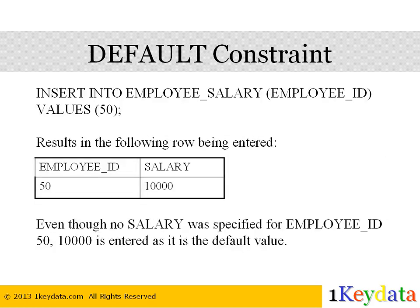Next, we attempt to insert data into the employee_salary table with the following SQL statement: INSERT INTO employee_salary (employee_id) VALUES (50). In the new row that's added, the salary column will be 10,000 even though no value was specified for the salary column in the INSERT INTO statement.